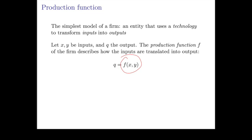So f says how much of the output you produce when x and y amounts of the inputs are used. And so q equals f of x,y says you produce q units of output when you use x units of the first input and y units of the second input.